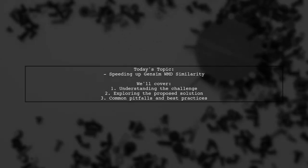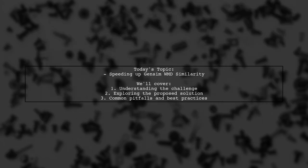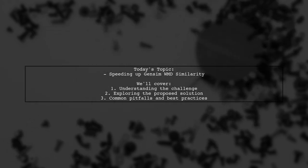Welcome to our Tech Explainer video. Today, we're tackling a question that many Python developers encounter when working with Gensim. Our viewer is looking to speed up the Word Mover's Distance similarity calculations using multiprocessing. Let's dive into the details.